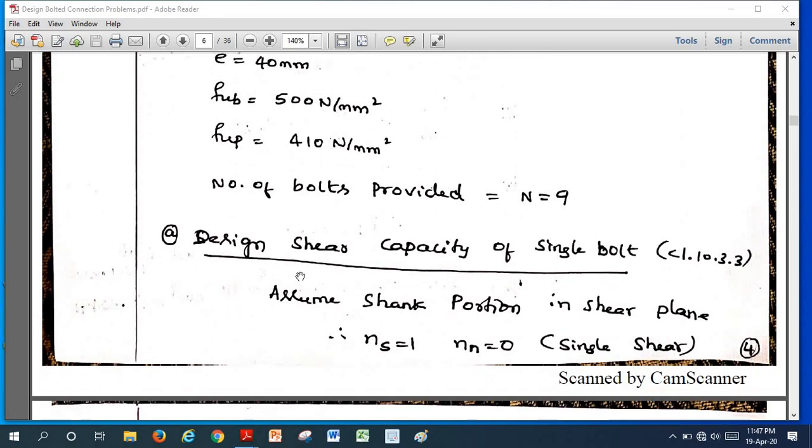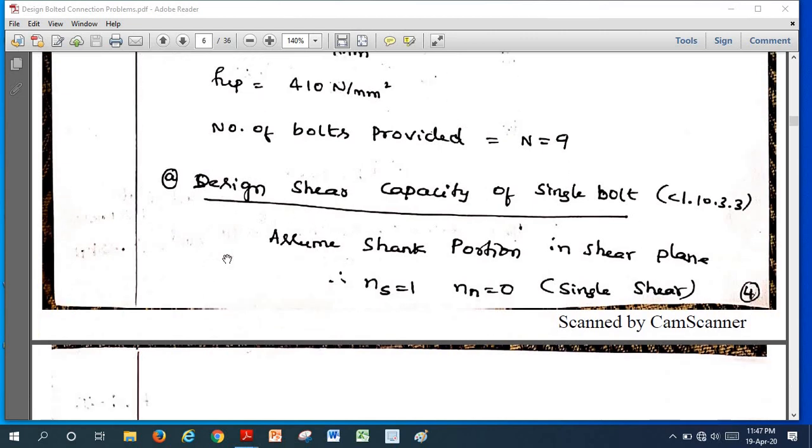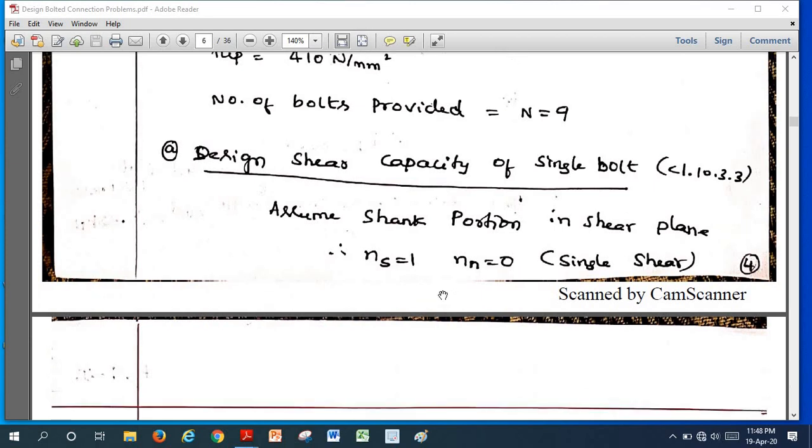Now to calculate efficiency, we calculate four different capacity of the joint or the strength of a joint. First one, we should calculate design shear capacity of the joint. For that we should calculate shear capacity of single bolt as per clause 10.3.3, we discussed in detail this thing in the last two problems.